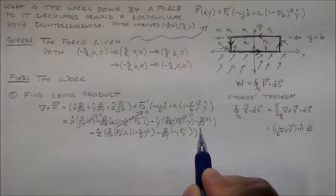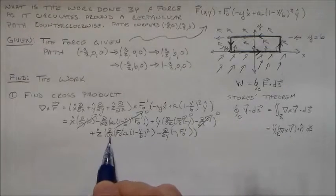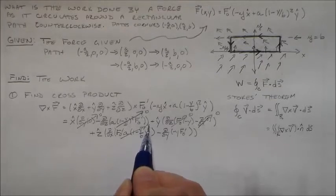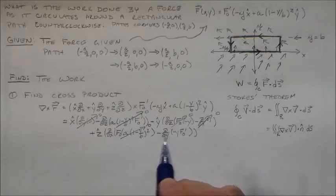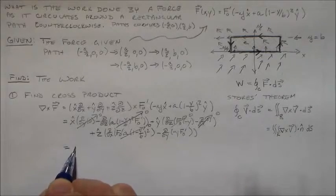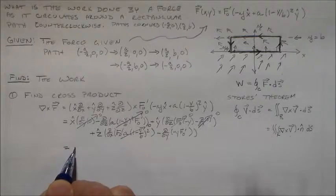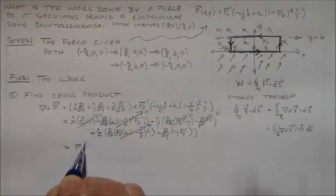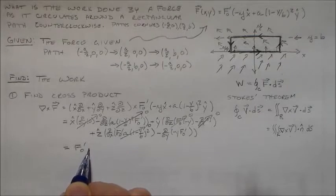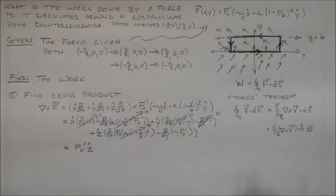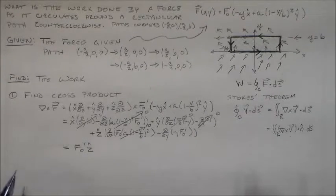So, that's going to be equal to f naught prime times z hat. Alright. So, that's our cross product. Now that you've seen the cross product, now we can take the integral.